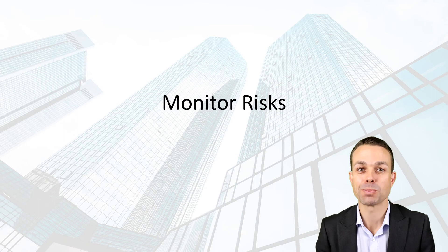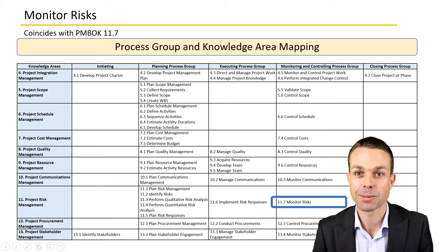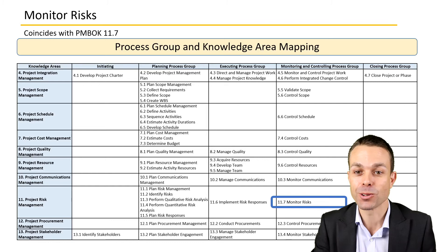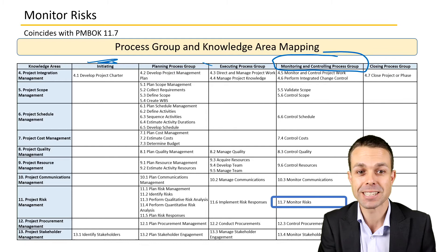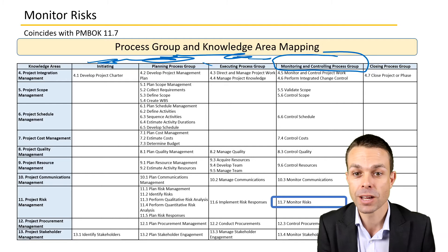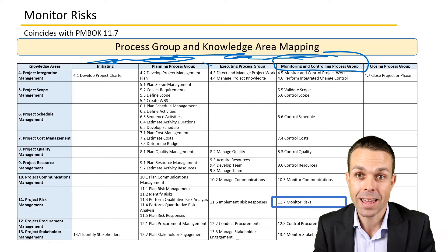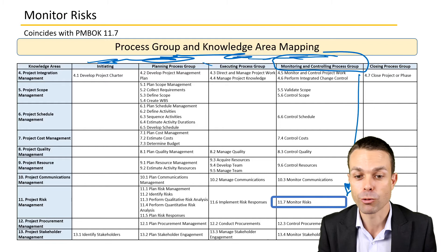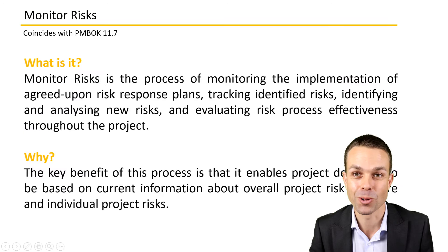Hi everyone, welcome back to these processes from the project management body of knowledge. Today we're looking at monitoring the risks in our project. As you can see, if we're monitoring and controlling something, there's a good chance we're in the monitoring and controlling process group. We've been through initiating, we've planned our project, we've executed and created the deliverables, and now we need to keep them under control and make sure that everything is tracking as we had planned — and that includes the knowledge area of risk management. We need to make sure that those risks are monitored and kept under control.